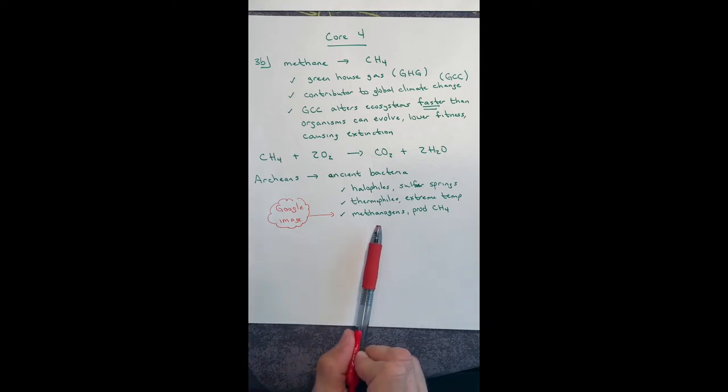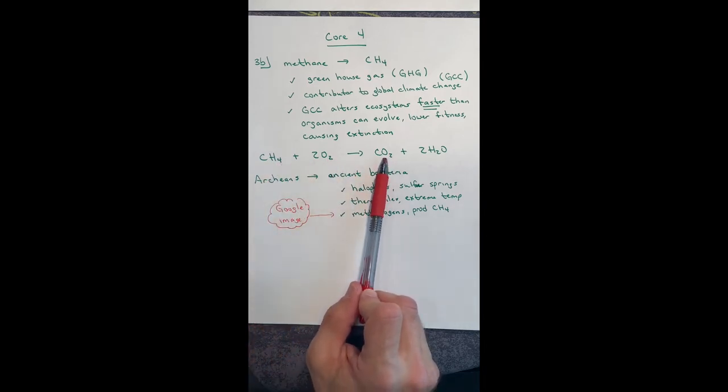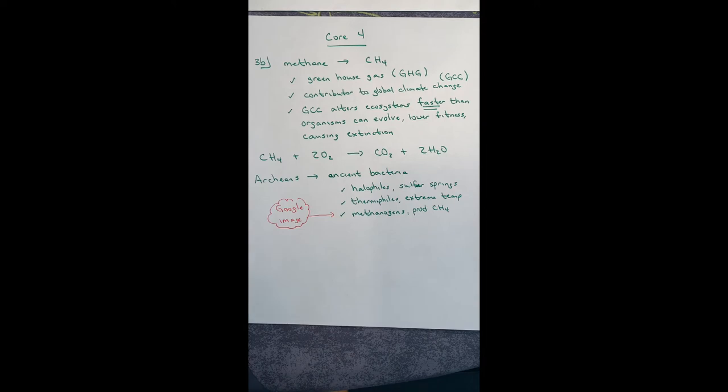While I agree that methanogens produce methane, there hasn't been some global bloom, some global spike in the last 50 years of methanogens. What there has been though, is a tremendous growth in the beef industry. And thus we see a correlation between the petroleum industry and the beef industry dumping a whole bunch of CH4 into the atmosphere. CH4 then bonds with the oxygen and gets converted to carbon dioxide. Carbon dioxide then captures the infrared energy and leads to global climate change, which then changes weather patterns. And here we go. So that's what they're talking about in question 3B.